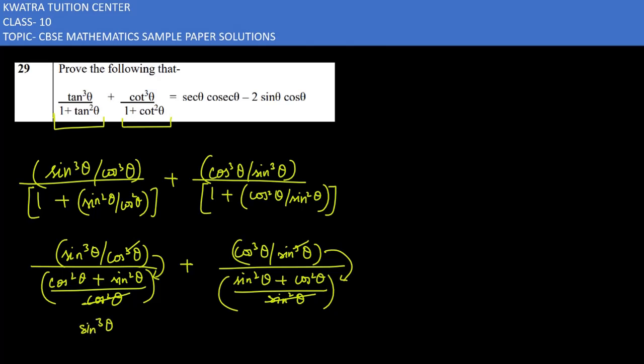This gives sin³θ/cosθ. Note that cos²θ + sin²θ and sin²θ + cos²θ are both the Pythagorean identity and equal 1, so they cancel out. We are left with the numerator values, and the next term becomes cos³θ/sinθ.